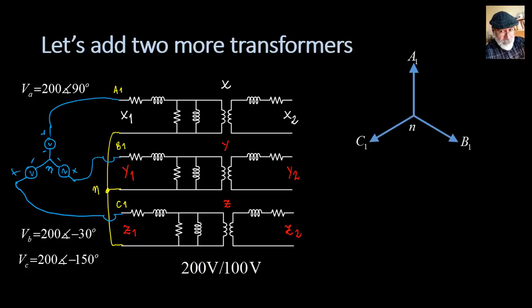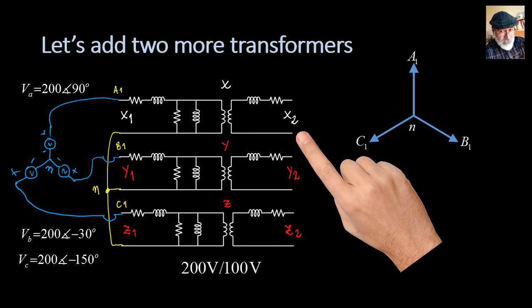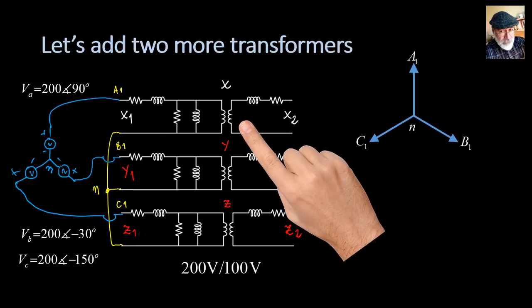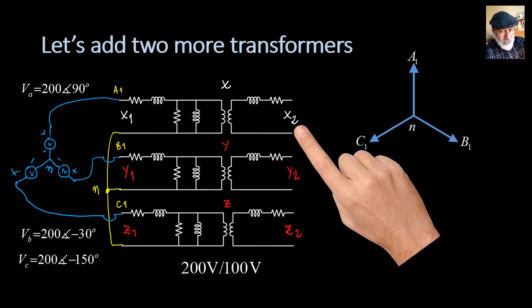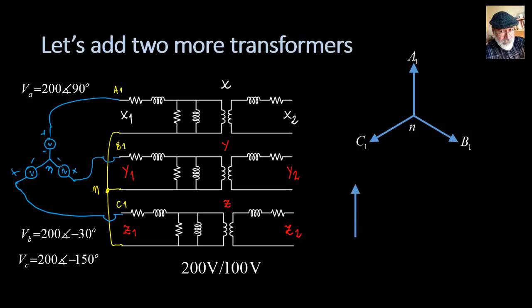200 volts at 90 degrees, negative 30, negative 150 degrees. Do you agree that the voltage in X2 — neglecting the drops in those impedances — would be 100 volts at 90 degrees? The voltage in Y2 would be 100 volts at negative 30 degrees (the phase of B1), and the voltage in Z2 would be 100 volts at negative 150 degrees. Now, how are we going to connect those secondaries?